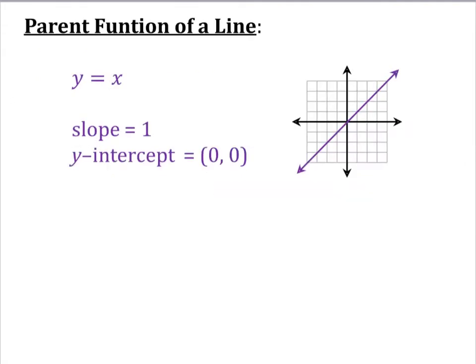The parent function of a line is y equals x. If we think about slope intercept form, that would mean that our parent function has a slope of 1 and a y intercept at 0, 0.